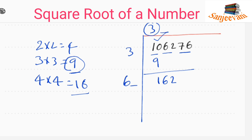We try 62×2: 2×2=4, 6×2=12, so 62×2=124. Whatever digit we are placing here, we multiply that number by itself in the tens position as well. So 62×2 gives us 124.